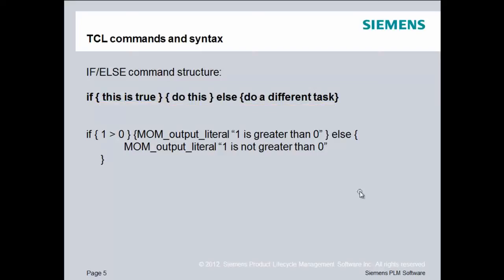The example I have here: if this will evaluate to true, mom output literal "1 is greater than 0". And the else clause, mom output literal "1 is not greater than 0". Now, the way the logic in this if-else statement is built, this portion of the if statement will never, ever execute, because 1 is always greater than 0.